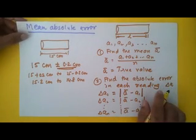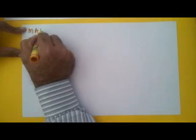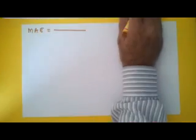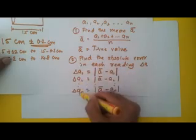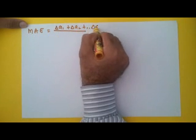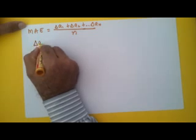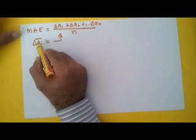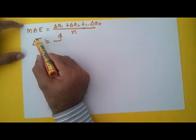Now I want to find out the mean absolute error. The mean absolute error is the mean of the absolute errors. So I have found out all the errors, and now I have to find their mean. The mean absolute error will be given by delta a1 plus delta a2 plus ... plus delta a_n, divided by n. This will give me the mean absolute error, which I will denote by delta a bar. This is the symbol we will use for mean absolute error, because delta a represents error and we have taken the mean of that.